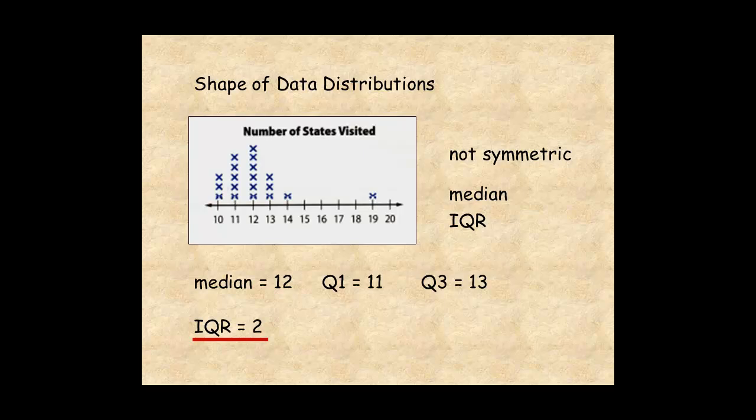The data are centered around 12 states. The spread of the data around the center is about 2 states.